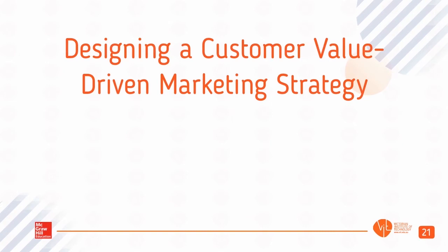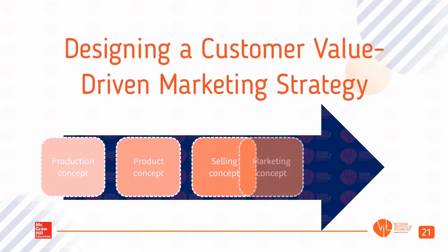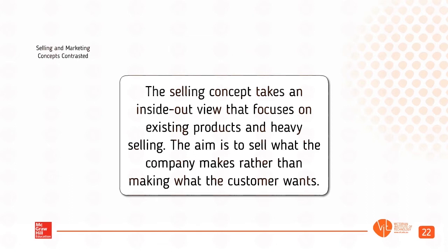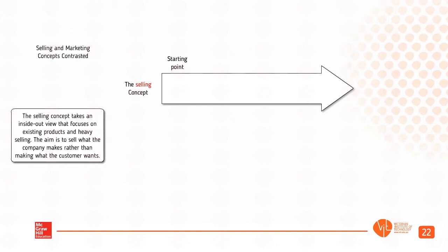Designing a Customer Value-Driven Marketing Strategy covers five orientations: Production Concept, Product Concept, Selling Concept, Marketing Concept, and Societal Marketing Concept. The Selling Concept takes an inside-out view that focuses on existing products and heavy selling. The aim is to sell what the company makes, rather than making what the customer wants. The Selling Concept: Starting Point — Factory; Focus — Existing Products; Means — Selling and Promoting; Ends — Profits Through Sales Volume.